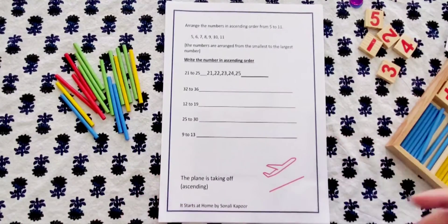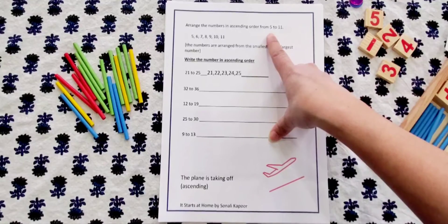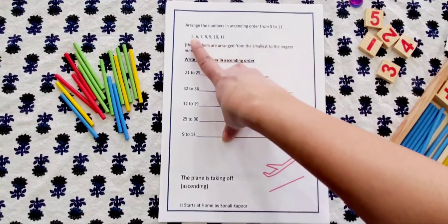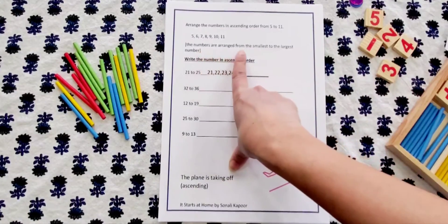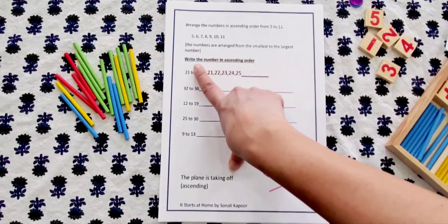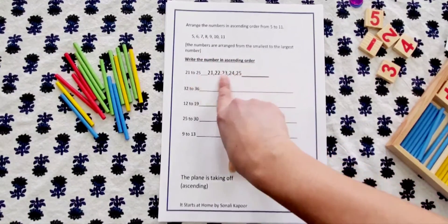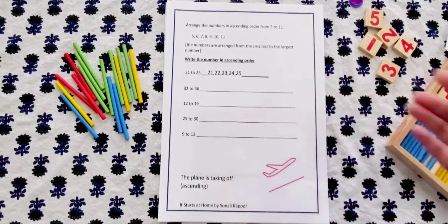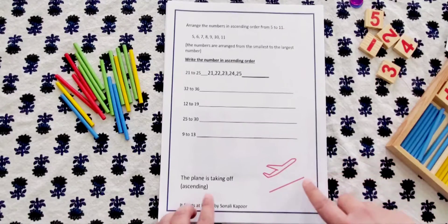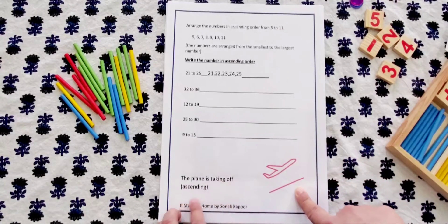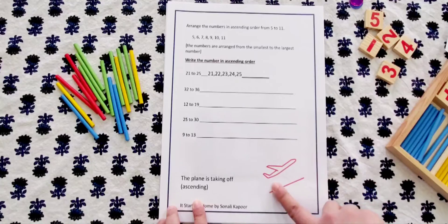Now we have some activities here which is arrange the numbers in ascending order from 5 to 11. So 5, 6, 7, 8, 9, 10, 11 - that's already been done. The numbers are arranged from smaller to the largest number. Write the numbers in ascending order, so the first one is done here, the rest of them the kids need to do. Again, just for reinforcing the concept, the plane is taking off which is ascending, so a picture showing taking off.